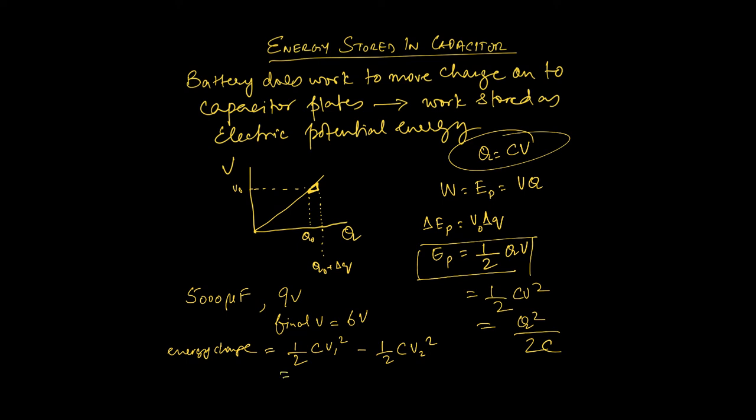So the energy change is going to be half c v one squared minus half c v two squared. So the voltage has changed. So we can write it like this, half 5000 microfarads, or 5000 times 10 to the negative six farads. And then v one is nine volts squared minus v two is six volts squared, which is equal to 0.113 joules. Please note that v one squared minus v two squared is not equal to v one minus v two squared. It's a common mistake that people make. Just be careful, make sure you are doing your algebra correctly.